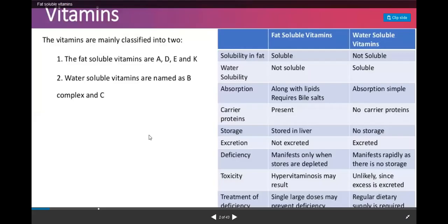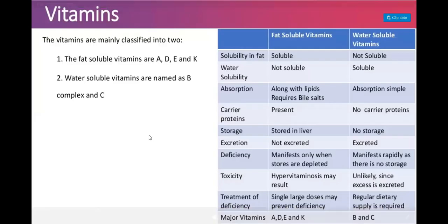We will start today with vitamins. These vitamins are classified into two groups: fat-soluble vitamins and water-soluble vitamins. In fat-soluble vitamins we will talk about vitamins A, D, E, and K, whereas in water-soluble vitamins we have the B and C group.